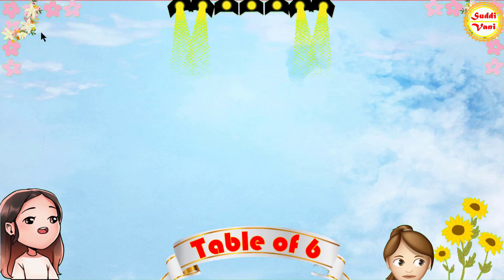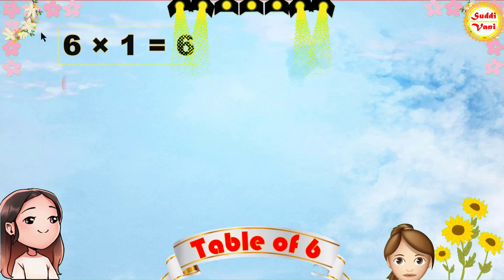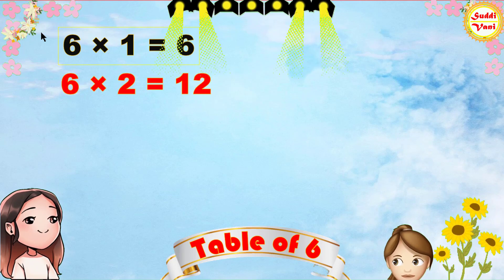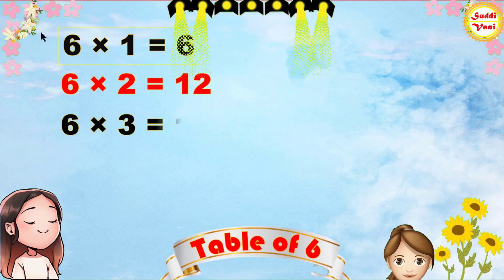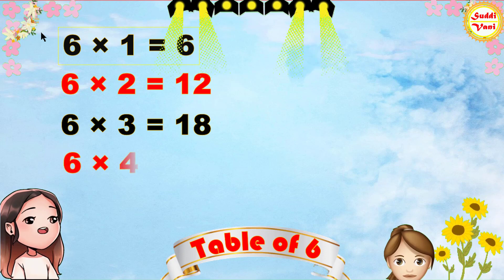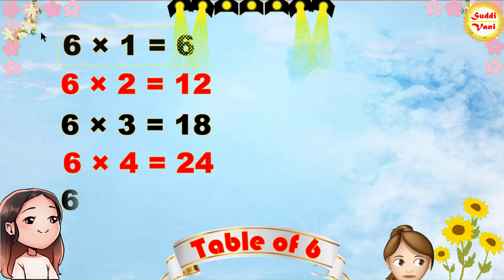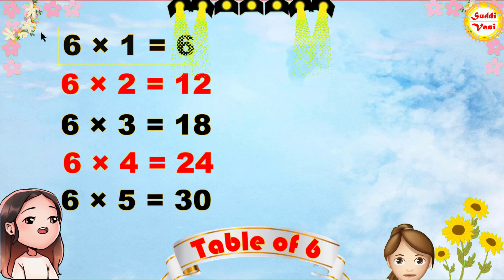Once again: 6 1s are 6, 6 2s are 12, 6 3s are 18, 6 4s are 24, 6 5s are 30.